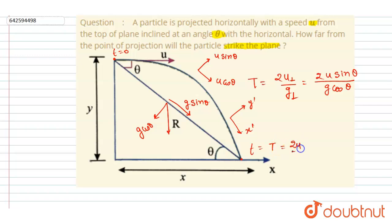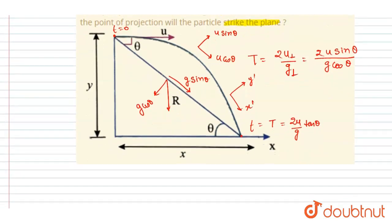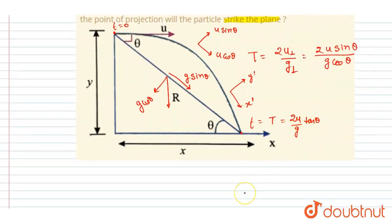Right, so as soon as we got the time of flight, we can calculate the x. Since the initial velocity is horizontal and there is no acceleration in horizontal direction, so I will write x is equals to simply u into capital T. Right, so just multiply this term with u, so you will get 2u² by g tan theta.